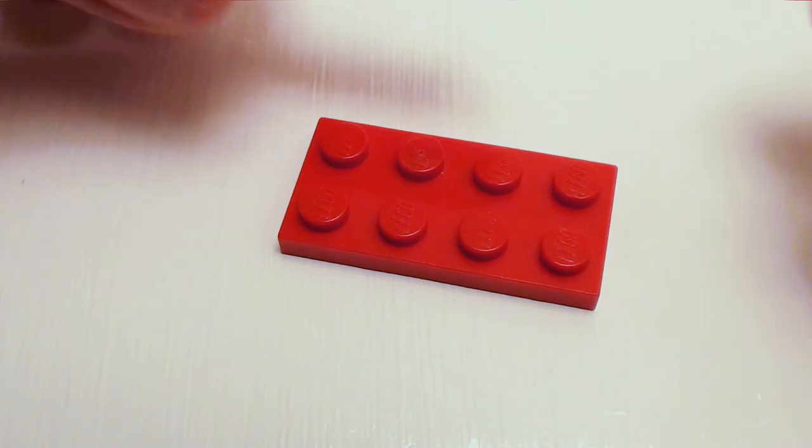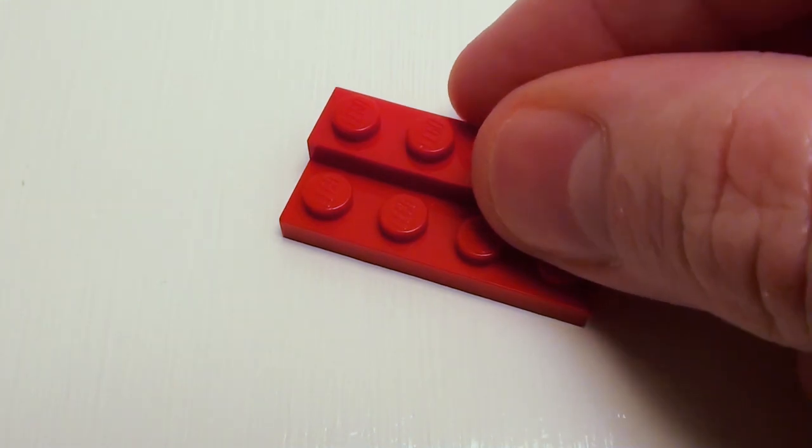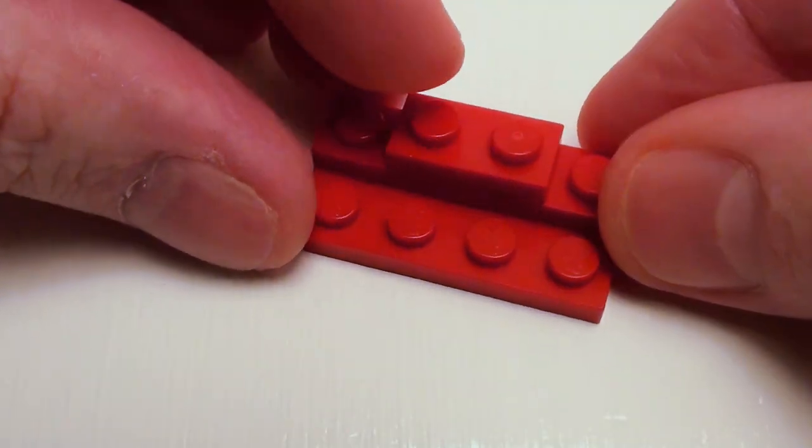For the front, start with a 2 by 4 plate. Let's set down a 1 by 4 plate on the top portion and a 1 by 2 plate right in the center.